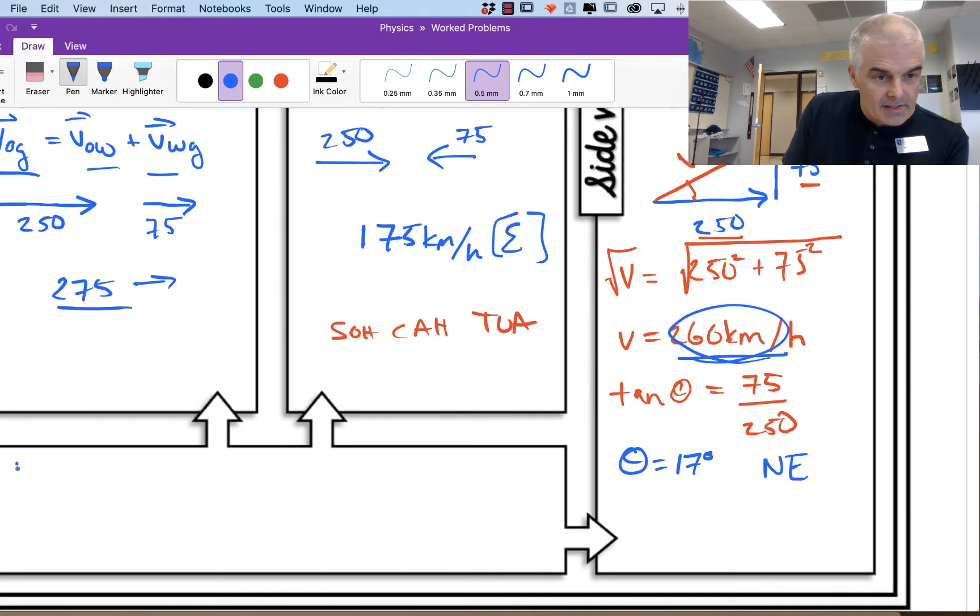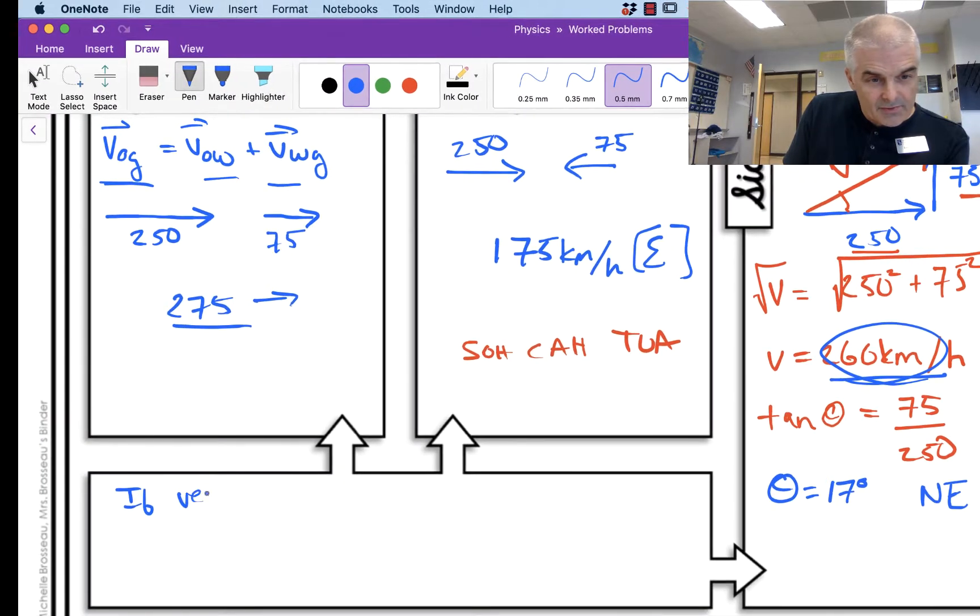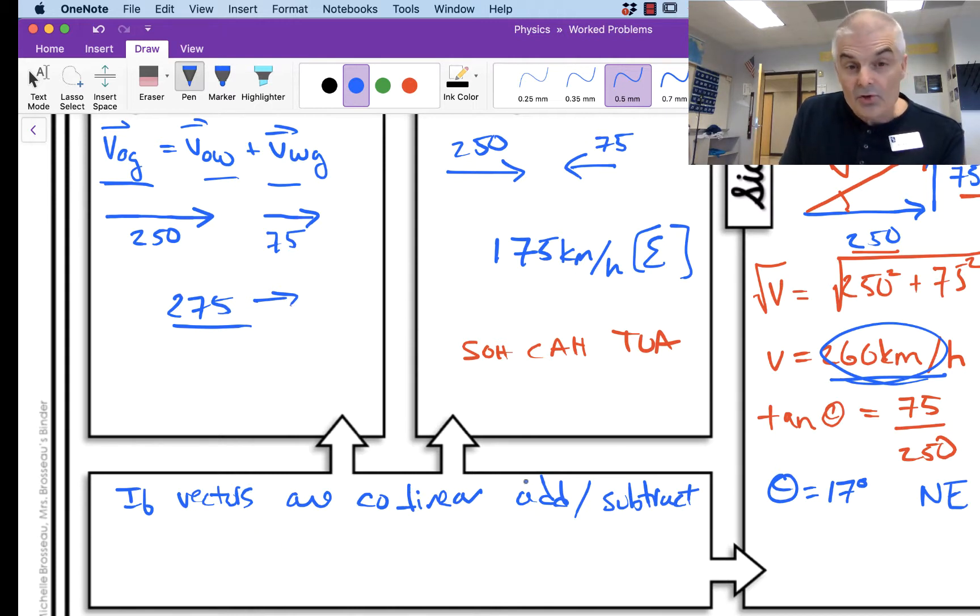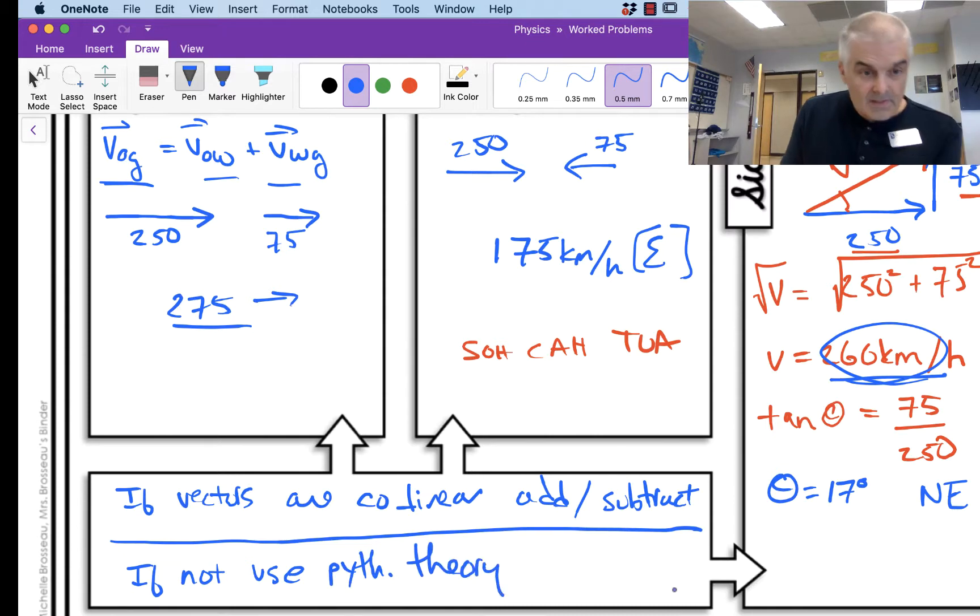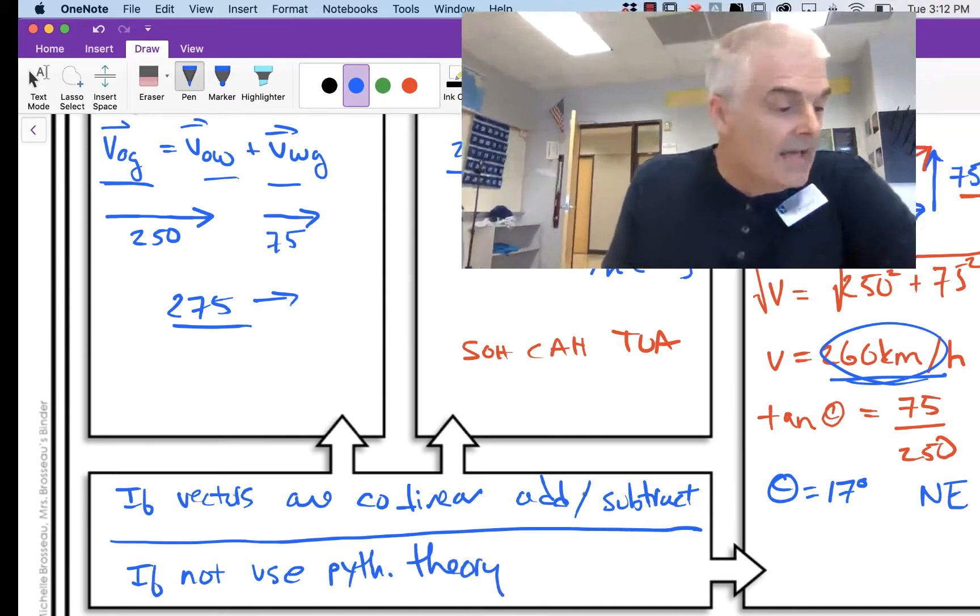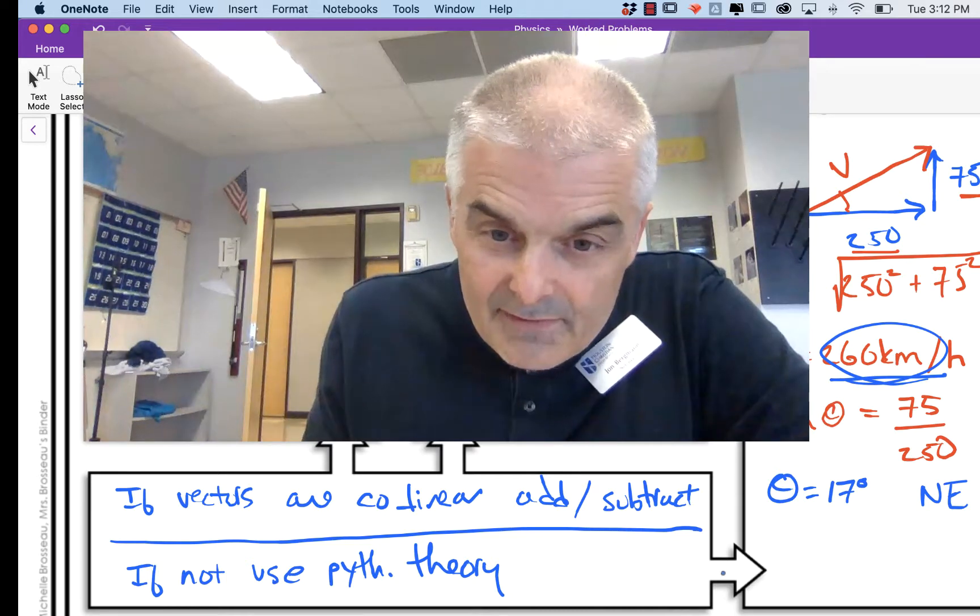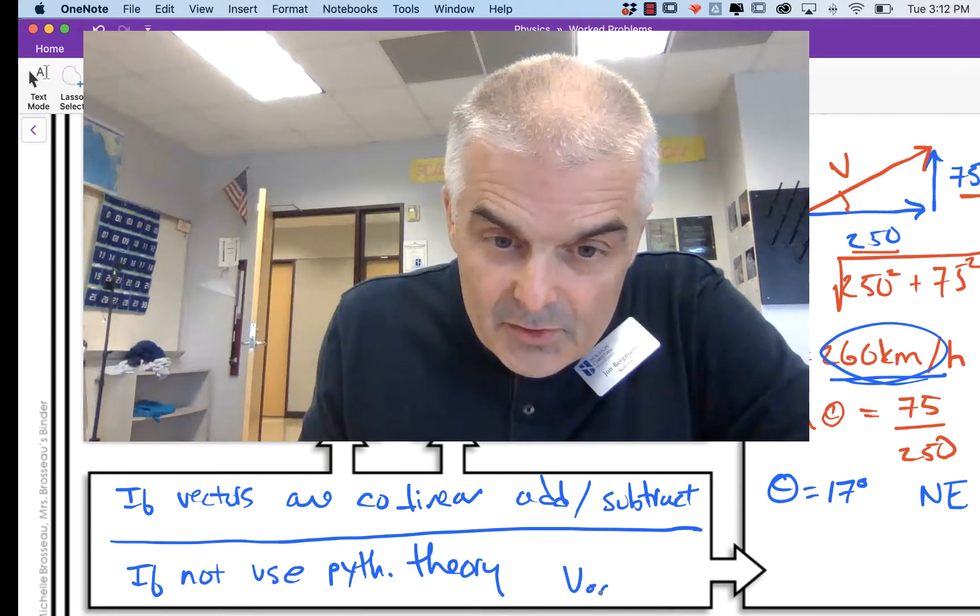So a couple notes here. If the vectors are collinear, then add or subtract depending on the direction. And if not, use the Pythagorean theorem, and you're going to be able to figure out what the final answer is for the VOG.